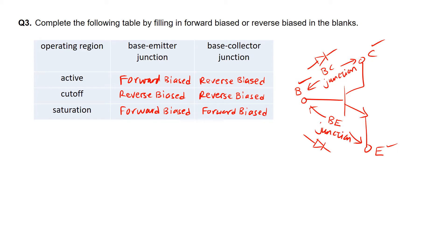For easy remembrance, we just have to remember that for saturation region, both the BE as well as BC junction are forward biased. For cut-off region, the base-emitter junction must be forward biased while the base-collector junction is reverse biased. So this is for question 3.